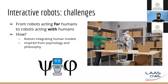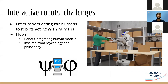Our goal here is to go from robots that act for humans but in separate environments, to robots acting with humans. The problem is not only to have a robot knowing its environment and its own embodiment, but also to model the human — in order to create a synergy and make collaborative tasks possible.